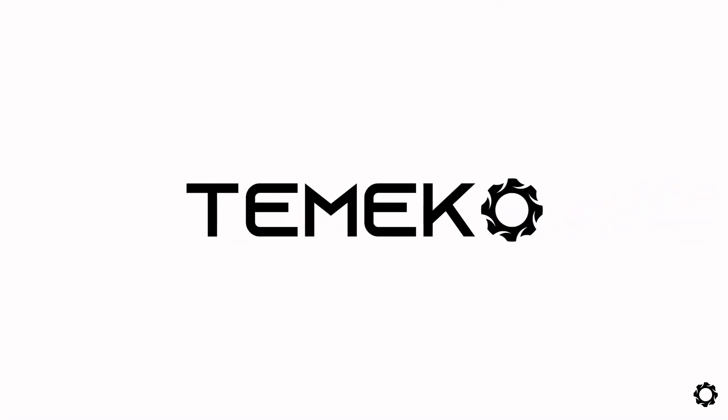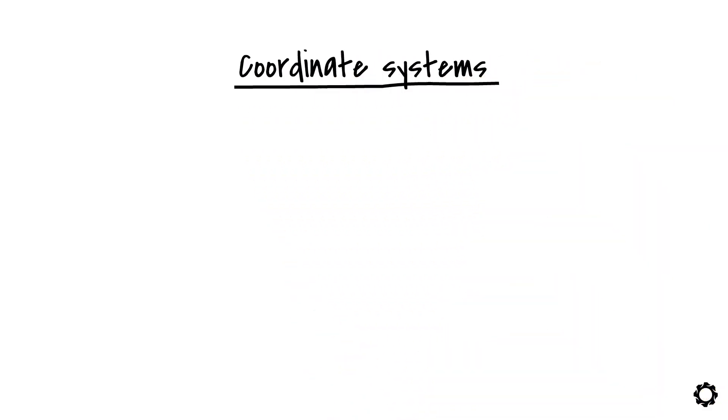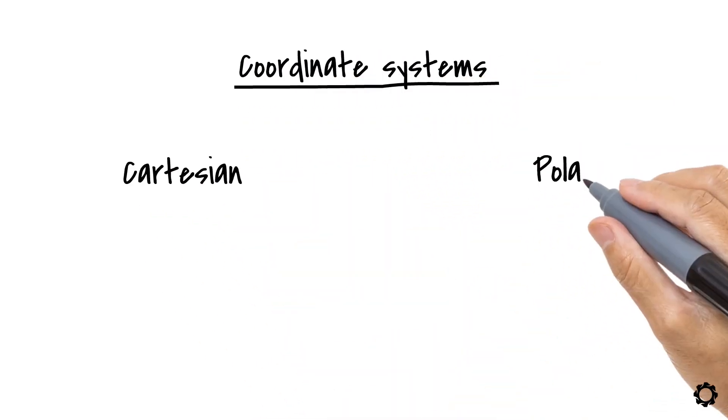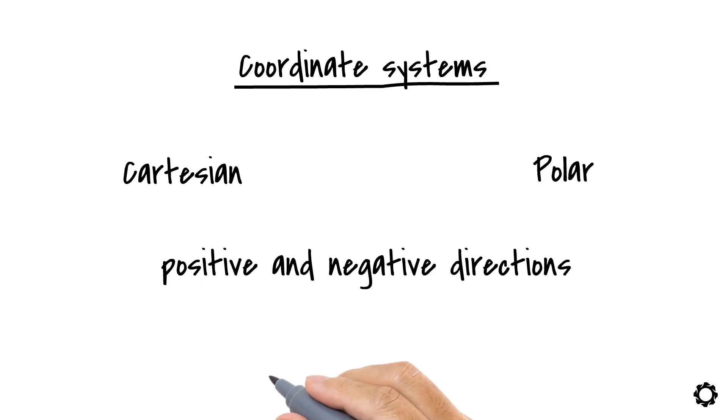In this video, we will take a look at the most common coordinate systems used in the course. We will focus on the Cartesian and polar coordinate systems. We will explain how to define the positive and negative directions of such systems and talk about some of their characteristics.